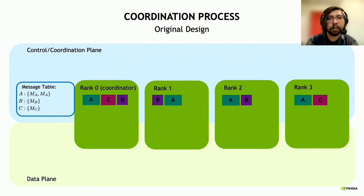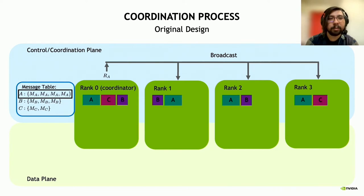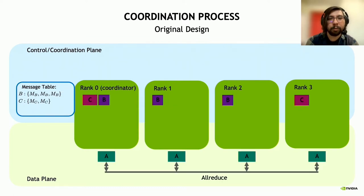On the next cycle, more tensors come in from the framework ready to be all-reduced. We repeat the process—all workers generate messages that get gathered to rank zero for new tensors. Rank zero records these messages into the message table. On this cycle, tensor A now has four messages, indicating to the coordinator that it's ready for a collective. Rank zero creates a response message and broadcasts it to all workers, who then proceed to do the all-reduce on A in the data plane and signal to the framework that tensor A data is ready for consumption.